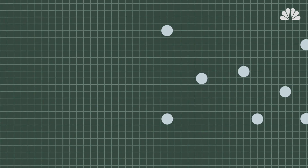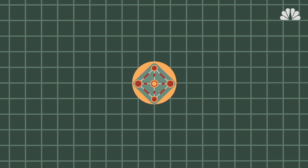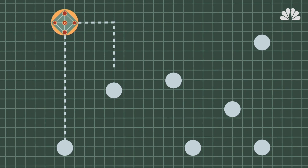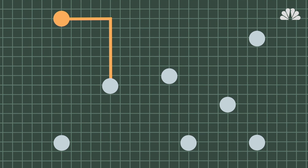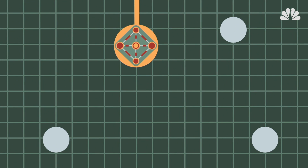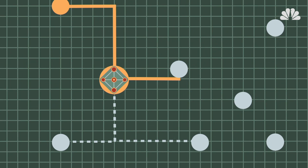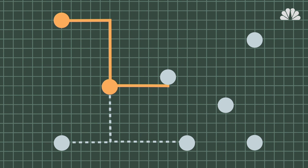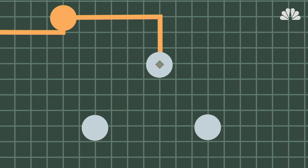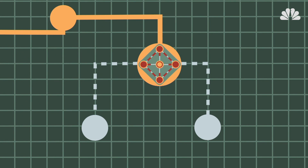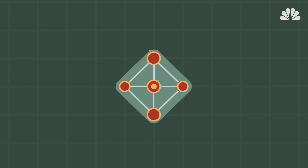The algorithm begins at the node of your starting point, then calculates distances to the nodes nearby to figure out which is the closest. Then the algorithm repeats the cycle with that node, measuring the shortest distance to the next node and the next, and continues this process until it reaches the destination node.